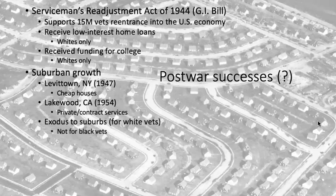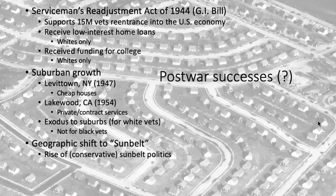White vets moved to the suburbs, not Black vets, as I mentioned, and then the shift to the Sun Belt — again, the Southwest in particular — and then the rise of Sun Belt politics: Nixon, Reagan, Goldwater. I know this is repetitive, but it's important because it's not only a political shift, it is a geographic shift as well. More people move there and vote for folks like Nixon and Reagan, and they subsequently have more political power.